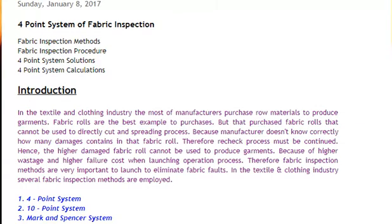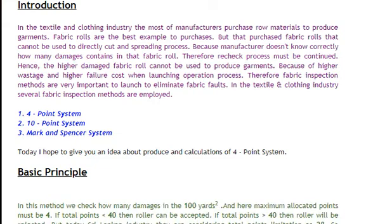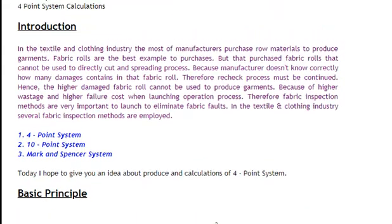Four point system of fabric inspection — introduction. In the textile and clothing industry, most manufacturers purchase raw materials to produce garments. Fabric rolls are the best example of purchases, but purchased rolls cannot be used directly in the cut-and-spread process because the manufacturer doesn't know how many damages are contained in those fabric rolls. Therefore, a recheck process must be continued, as higher-damage fabric rolls cannot be used to produce garments due to higher wastage and higher failure costs when launched in the operation process.